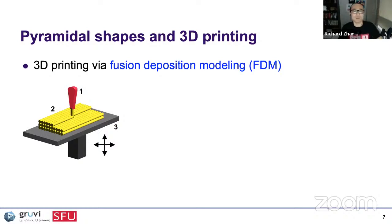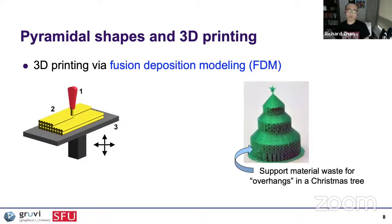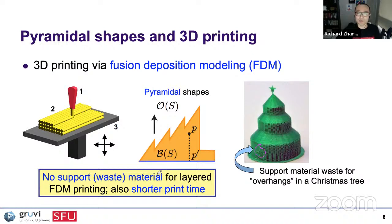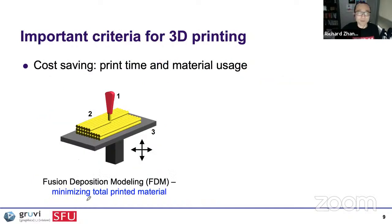The most popular 3D printing mechanism is FDM — think of squeezing toothpaste layer by layer. If you want to print a tree-like shape, it has overhangs, and in order to print bottom-up, you need support material, which is waste because you have to get rid of it after printing. If a shape is pyramidal — a height field — there will be no support waste, saving print time. Minimizing total print material is one criterion for cost saving. Another popular mechanism is powder-based printing, where layer by layer you push powder to form a layer and a print head melts the material to solidify the shape.